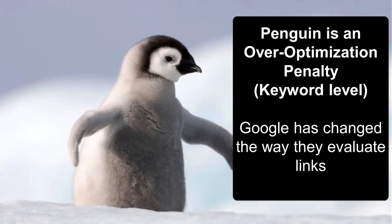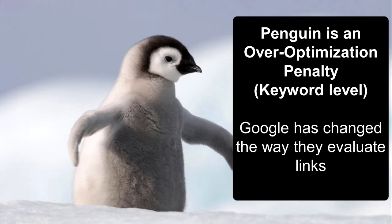Now Penguin — it's an over-optimization penalty at the keyword level, meaning you could drop out just for 'Plumber Melbourne,' that one search phrase. The most common way we see that happen is where people have paid an SEO company to put links out all over the web, all using the same phrase like 'Plumber Melbourne' as the anchor text. Google is smart enough to find 236 inbound links all with the same text and consider them all spammy, effectively removing the site from search results for not doing it the right way.